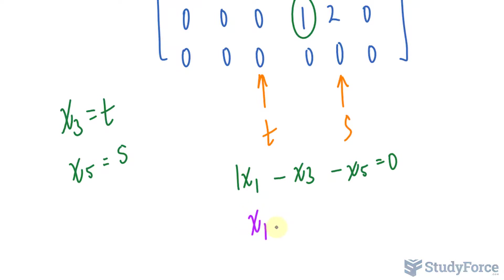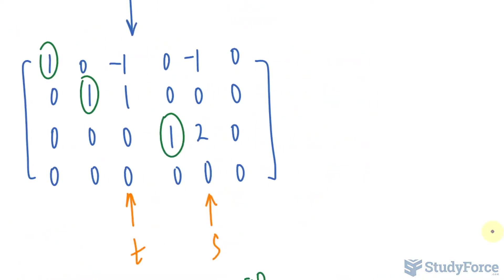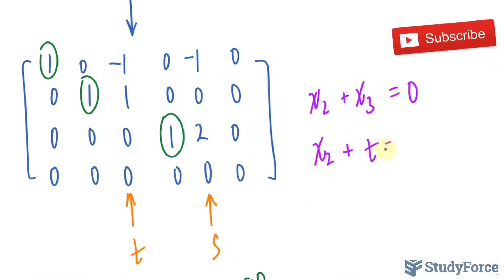So, I have x sub 1 minus t minus s is equal to 0. And I have to do the same thing for the other two rows. So, let's make some space over here. I'll write down x sub 2 plus x sub 3. That's equal to 0. Remember, I'm replacing x sub 3 with t. So, x sub 2 plus t. And this equation is good. Unlike the previous one, we can actually solve for t. So, I'll bring that over and I end up with x sub 2 is equal to negative t.